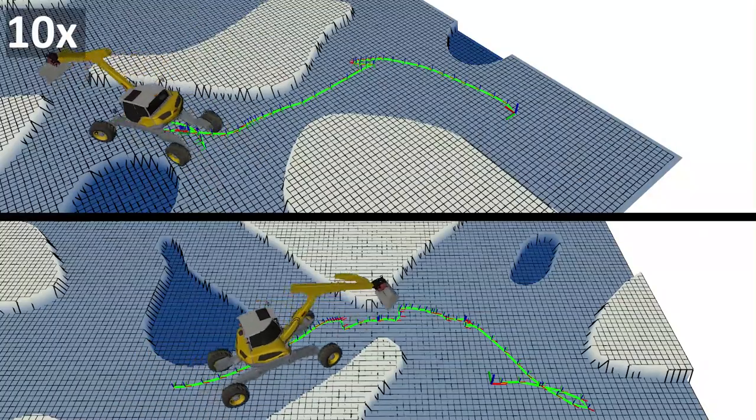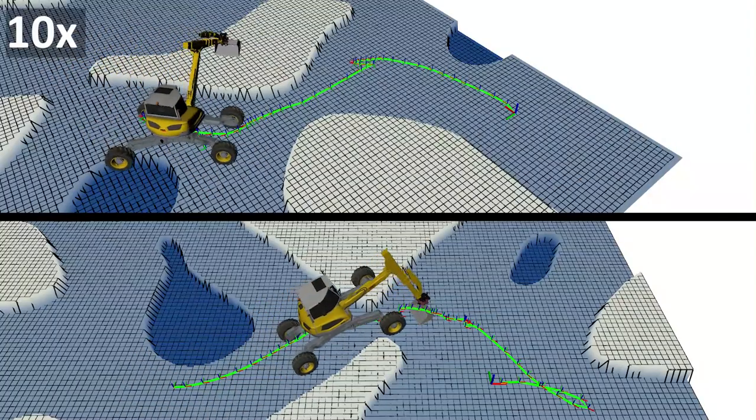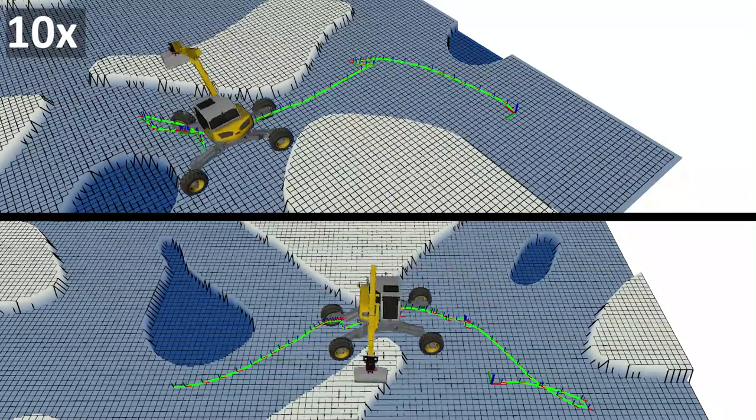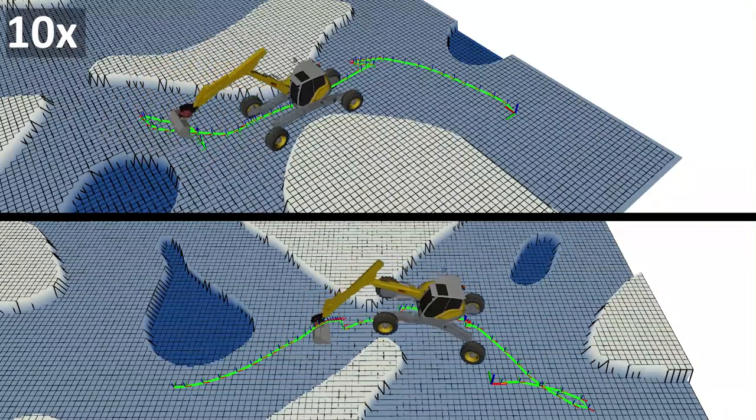One can prefer shorter paths where legs break contact or longer purely driving paths by merely tuning the cost function.